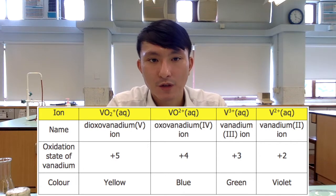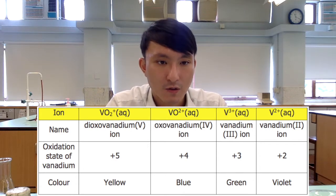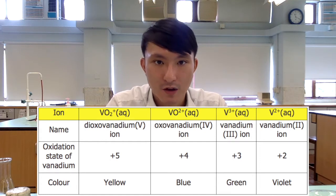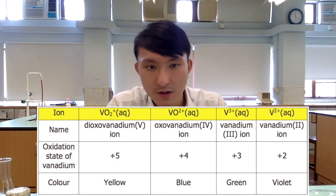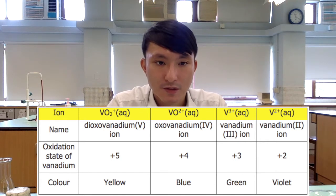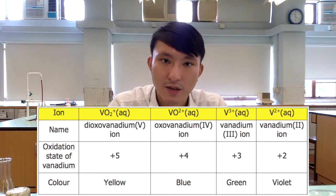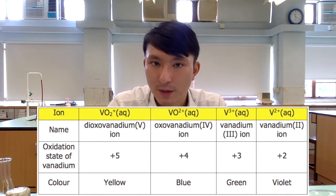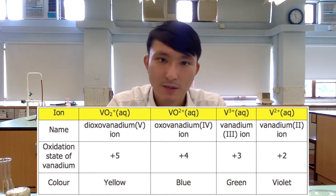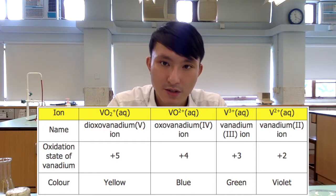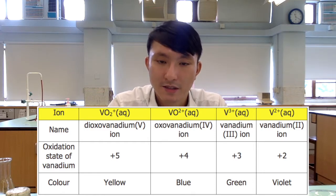First, we have the dioxo-vanadium(5) ion, VO2+. The vanadium atom has a +5 oxidation state and it is yellow in color. The second is oxo-vanadium(4) ion, VO2+, with oxidation number +4 for its vanadium atom and it is blue in color. Moving on to vanadium(3) ion, V3+, oxidation state +3, green in color. The last one is vanadium(2) ion, V2+, oxidation state +2, and it is a purple ion.